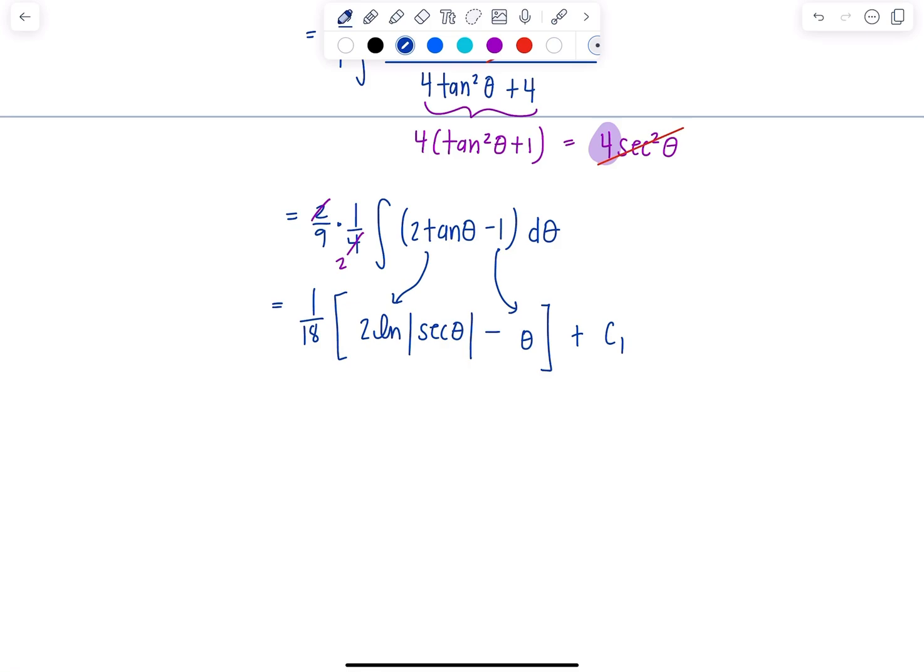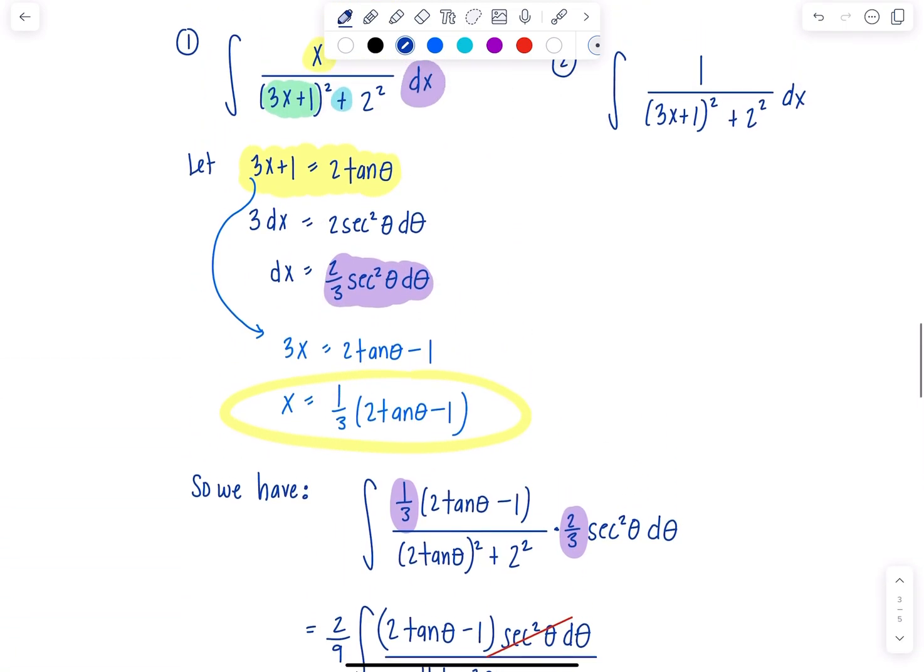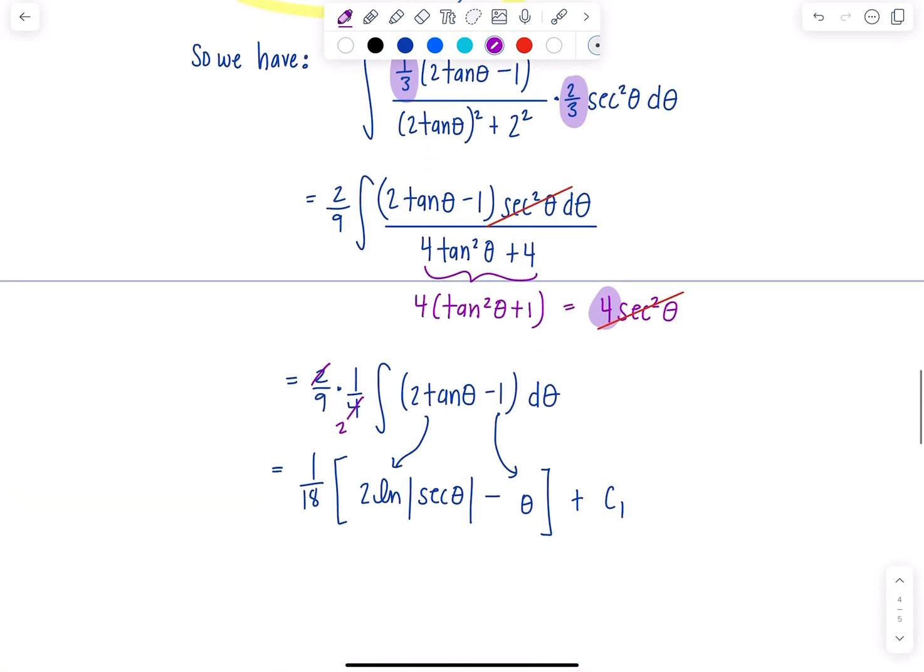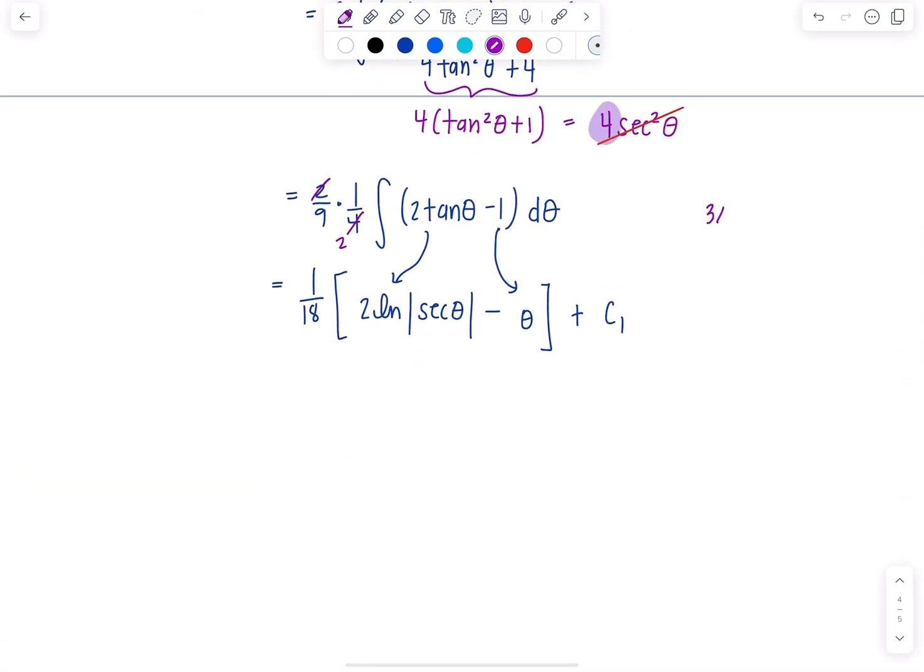To get back to the original variable x, I need to draw a triangle. Go back to where we let 3x plus 1 equal 2 tan theta. That means 3x plus 1 divided by 2 is tan theta. Draw a triangle. Tangent of theta is the ratio of the opposite over adjacent side. The hypotenuse you can find by the Pythagorean theorem, and it's going to give me back radical 9x squared plus 6x plus 5.